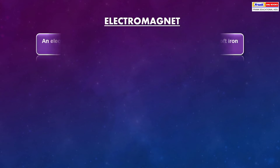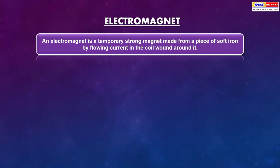Now the concept of electromagnet. An electromagnet is a temporary strong magnet made from a piece of soft iron by flowing current in the coil wound around it.